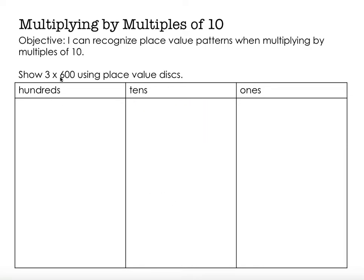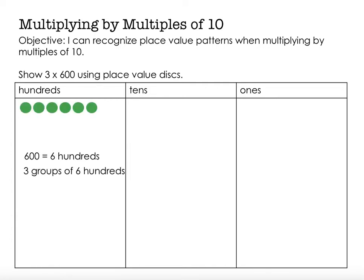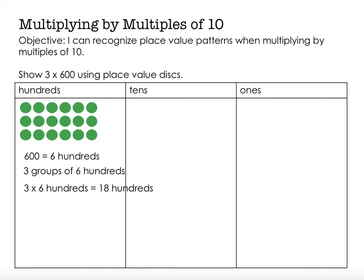We're going to do the same thing again — not 3 times 6, but 3 times 600. 600 is the same thing as 6 hundreds. So I need 3 groups of 600s. There's 1 group of 600s, 2 groups of 600s, 3 groups of 600s. I have an array — 3 groups of 6, so 3 times 6 is 18. So 3 times 600 is 1800. I have no tens and no ones. So 3 times 600 is 1800.